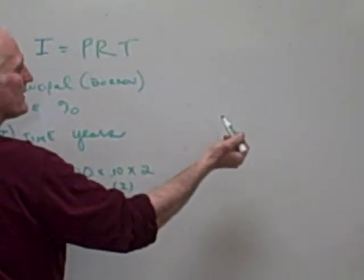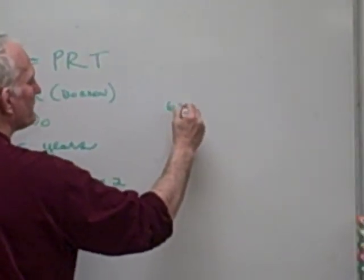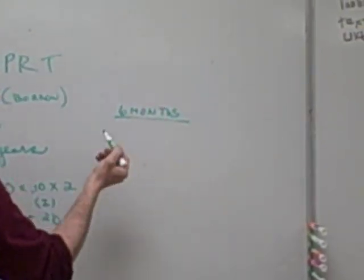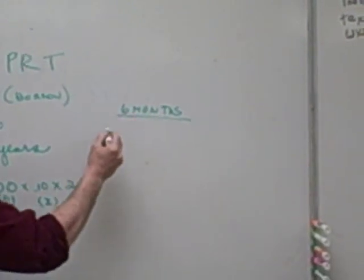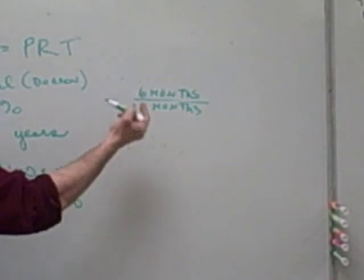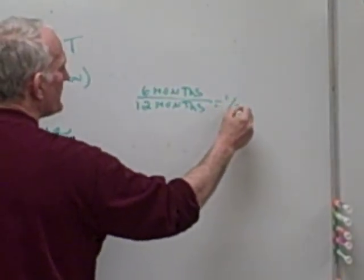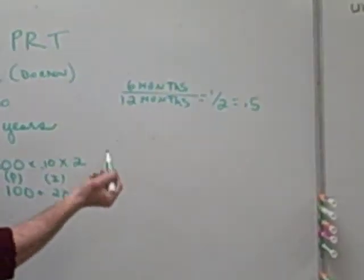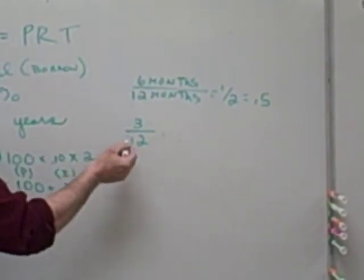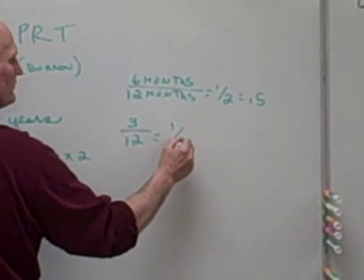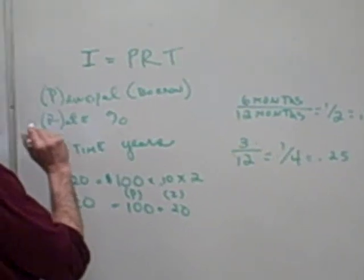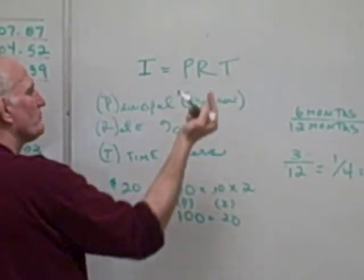Sometimes students get confused over the time, so I'd like to do a few time calculations. If the loan was for six months, you would have to express the amount in years. Since there are twelve months in a year, six months expressed in years would be one half or 0.5. Likewise, if it was for three months, three out of twelve would be one fourth of a year, or 0.25.